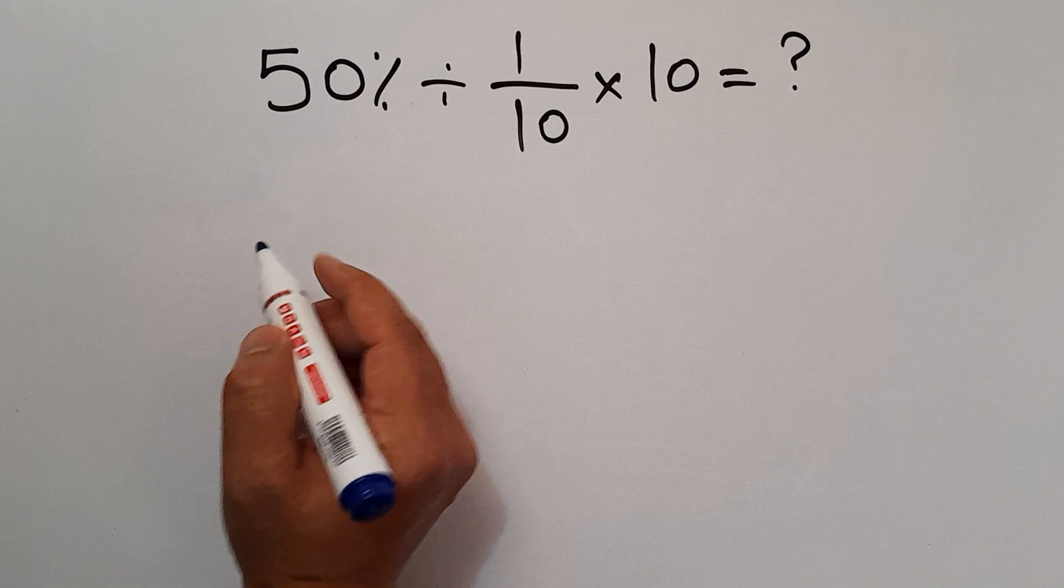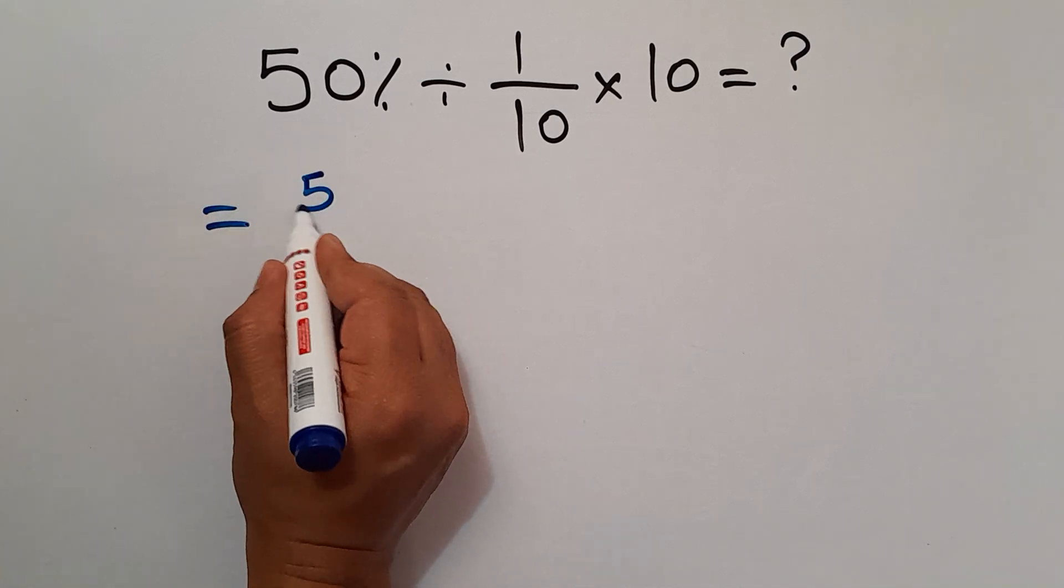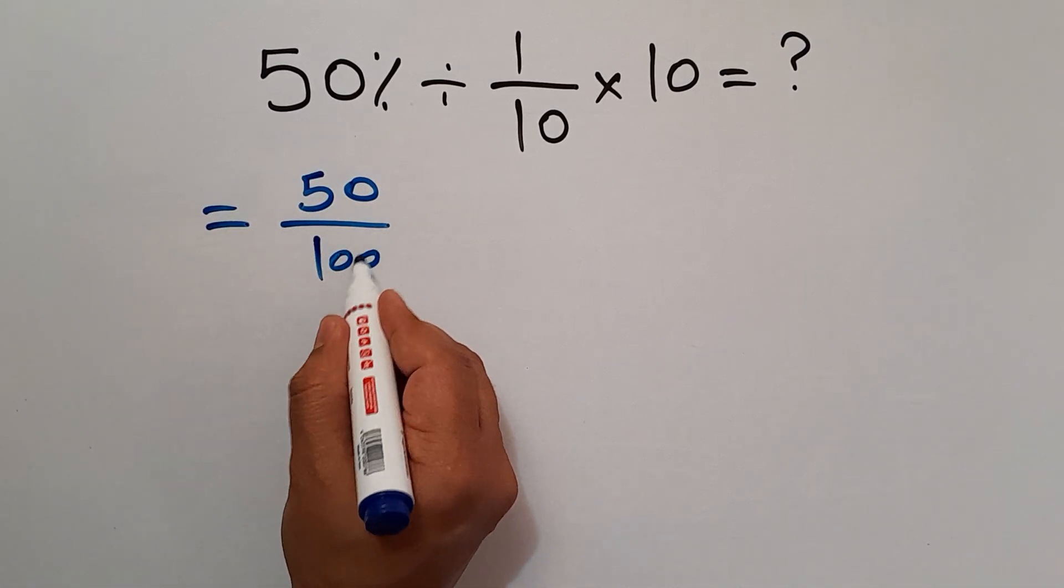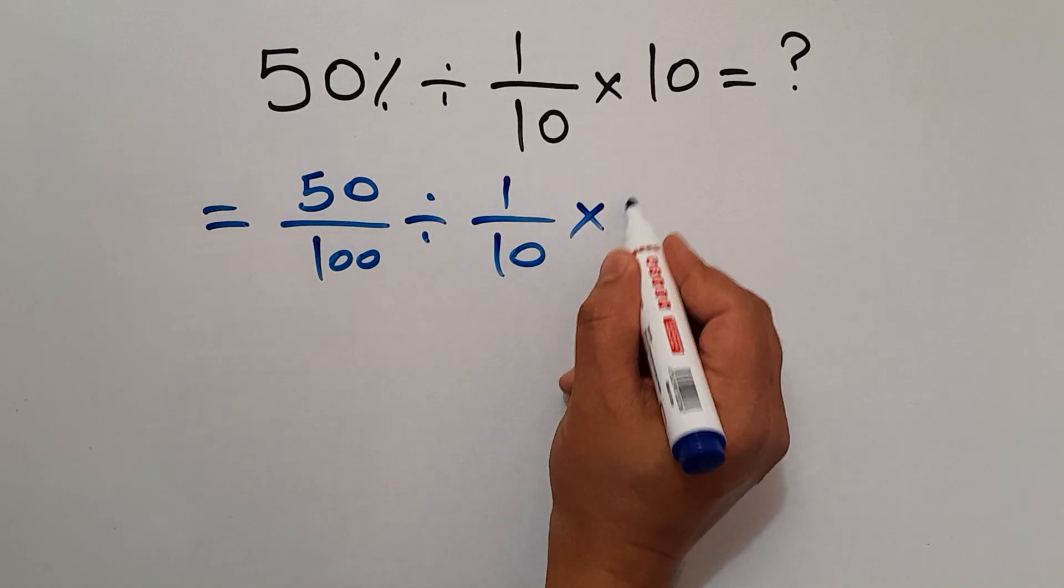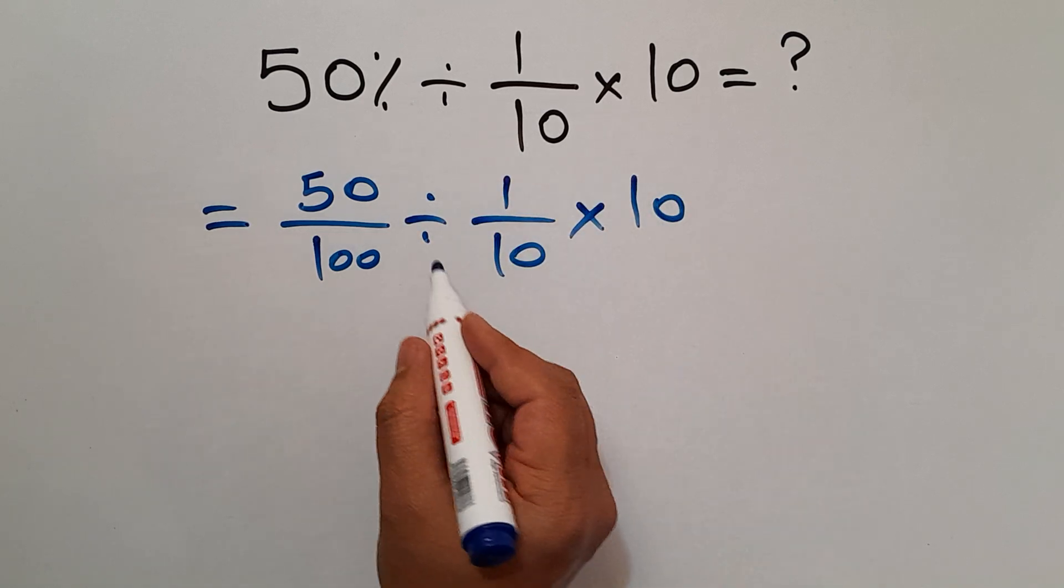50% is the same as 50 divided by 100, and divided by 1 over 10, then times 10.